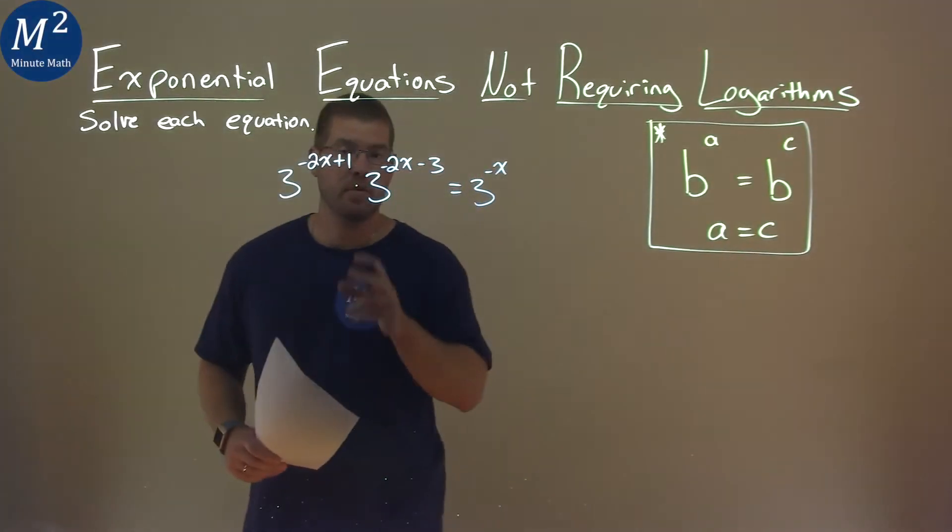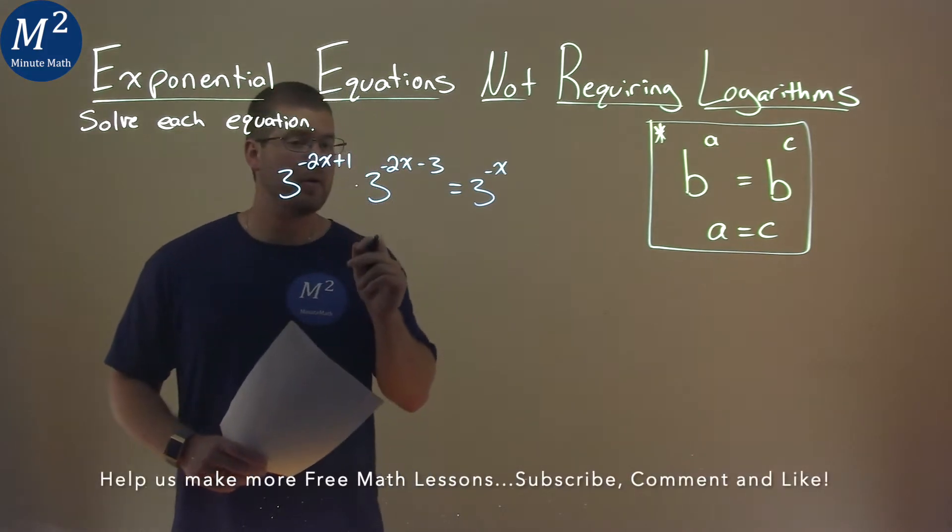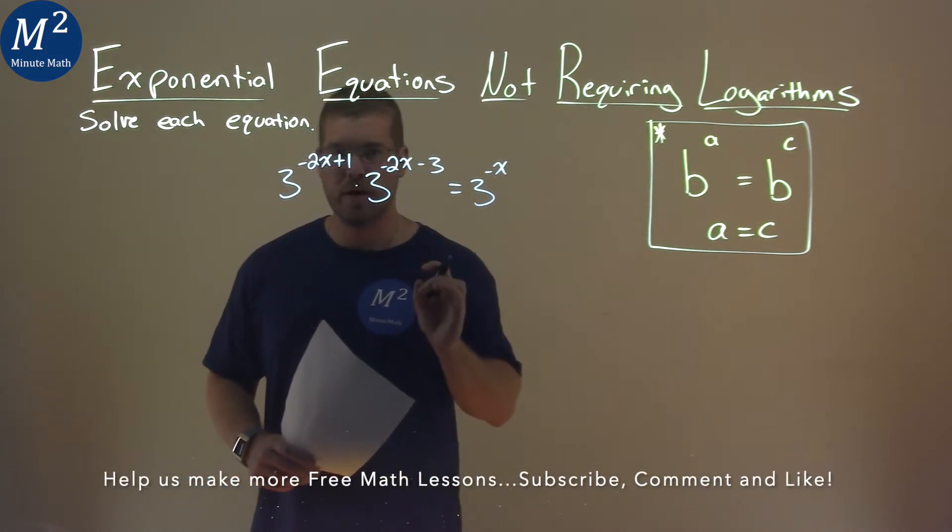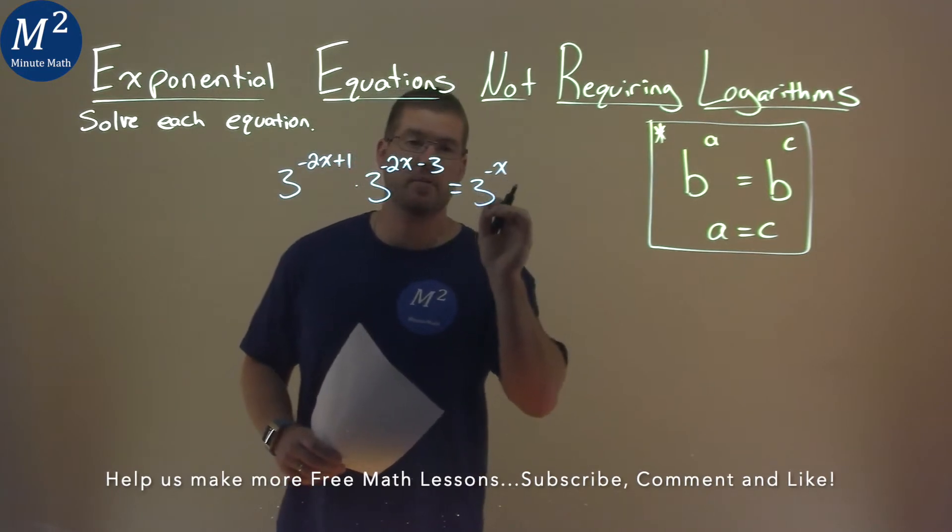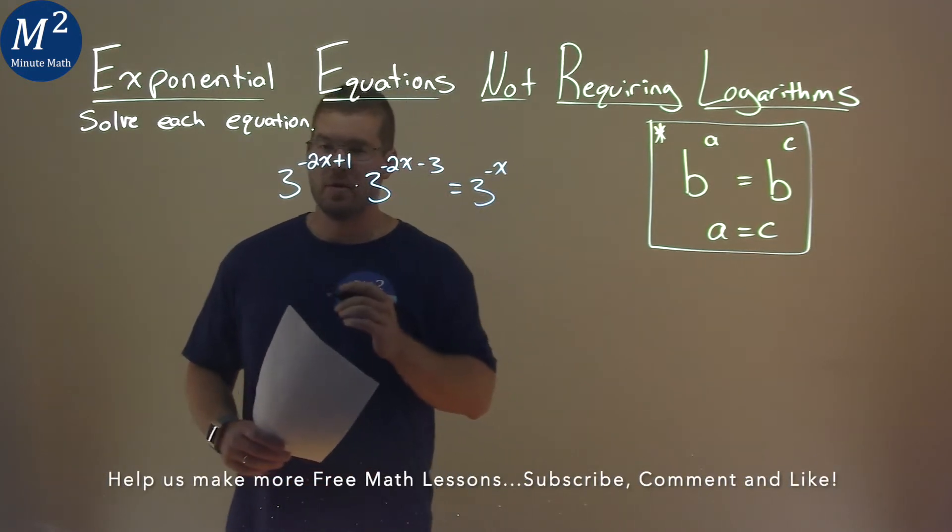We're given this problem right here, 3 to the negative 2x plus 1 power times 3 to the negative 2x minus 3 power is equal to 3 to the negative x power, and we have to solve this equation.